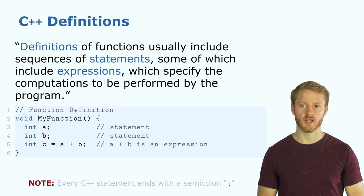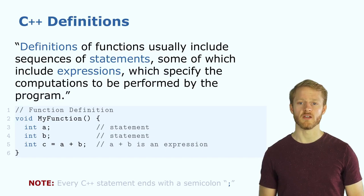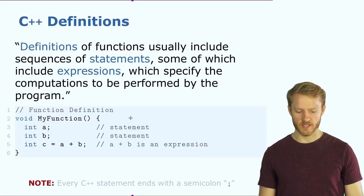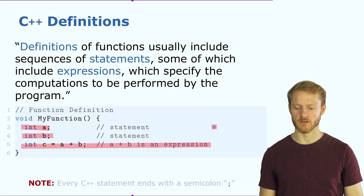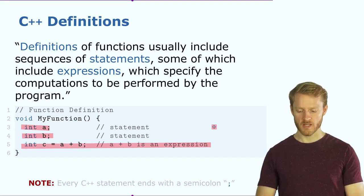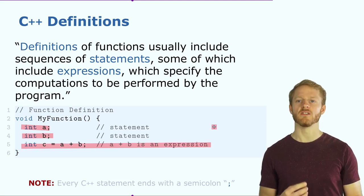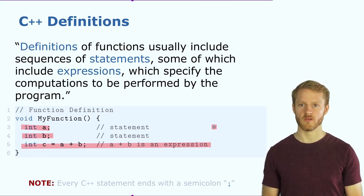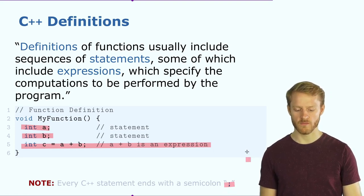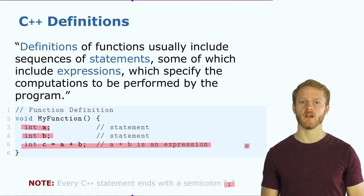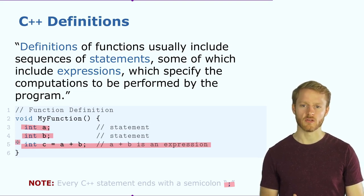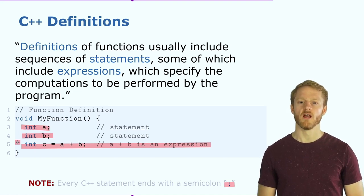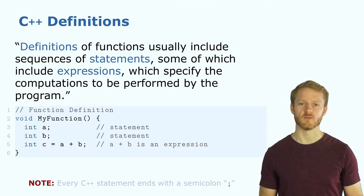Definitions of functions usually include statements and different expressions, and these specify how the computation is performed. It's important to note that all statements must end with a semicolon — the language requires that. The spaces and indentation are not strictly necessary; we could write everything on one line if we respect the semicolons, but then the code would not be very readable. So it's nice to keep some formatting.